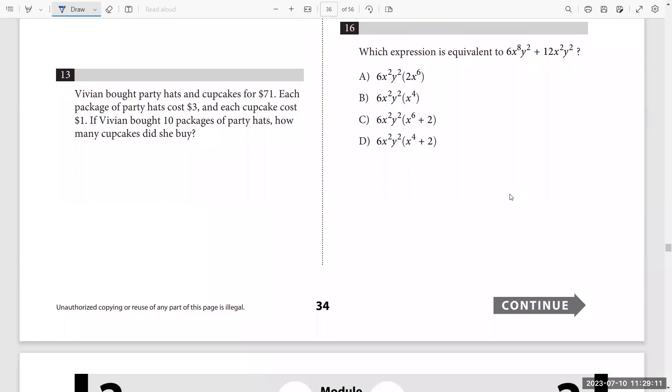Question 13. Vivian bought party hats and cupcakes for $71. Each package of party hat cost $3 and each cupcake cost $1. Vivian bought 10 packages of party hats. So 10 packages of party hat times the price of the hat is 3, plus the number of cupcakes X times the price of one cupcake is $1 times one. The cost of the two amounts here is $71. The question now finds X, how many cupcakes. This is the number of cupcakes. So X is equal to 71 minus 30 gives you 41. This is the cupcakes.